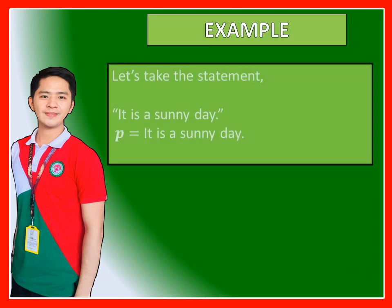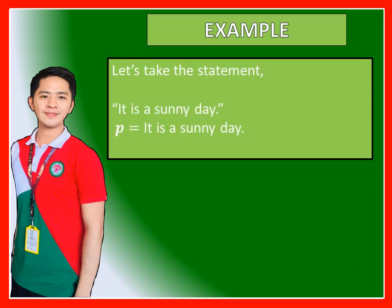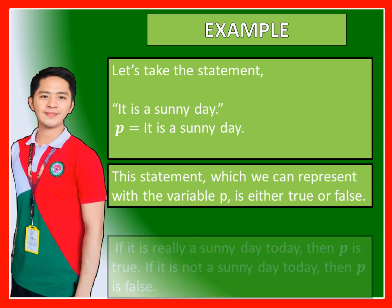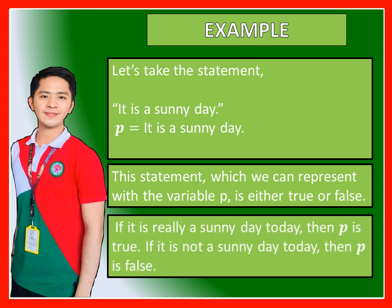Example: Let's take the statement 'It is a sunny day.' So our P is 'It is a sunny day.' This statement, which we can represent with the variable P, is either true or false. If it is really a sunny day today, then P is true. If it is not a sunny day today, then P is false.